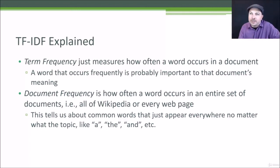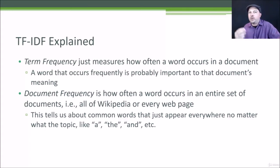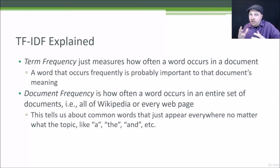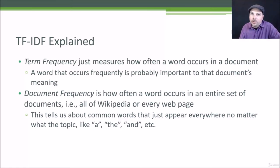All term frequency means is how often a given word occurs in a given document. So within one webpage, within one Wikipedia article — how common is a given word within that document? What is the ratio of that word's occurrence rate throughout all the words in that document? That's it. That's all term frequency is.